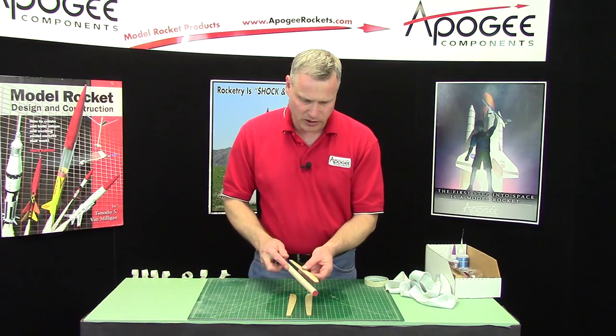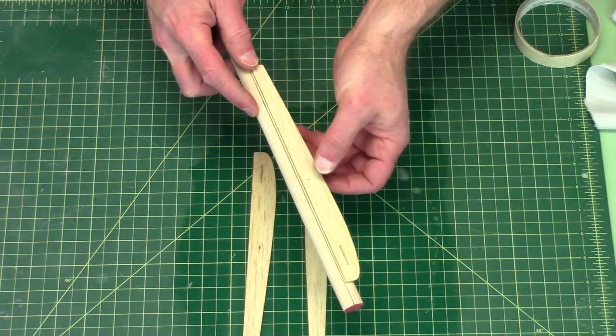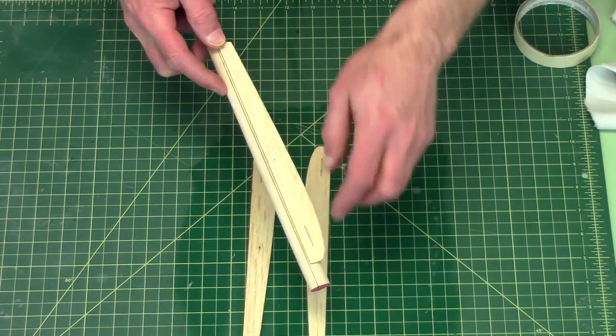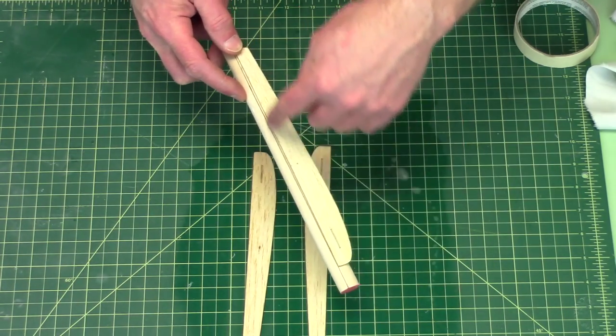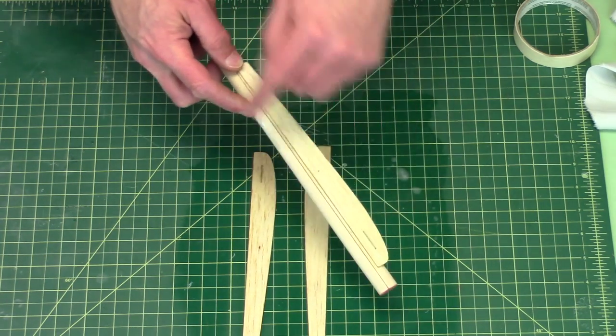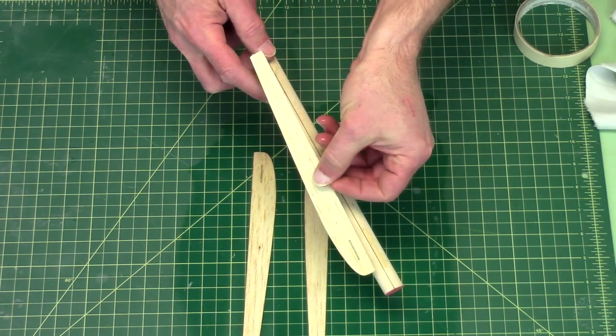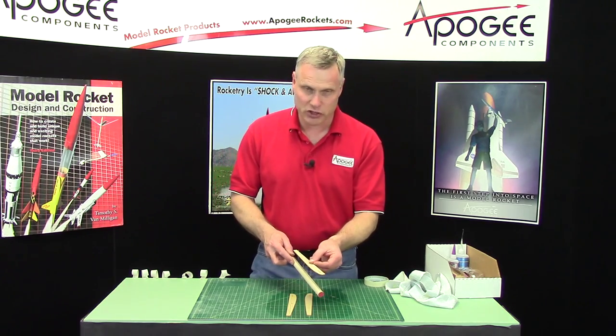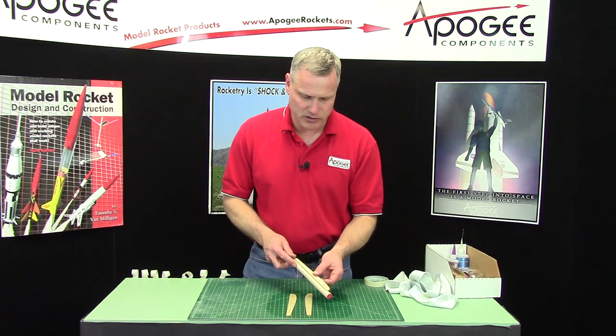Now we're going to lay these on the balsa wood like this but it's important that we get all the pieces going in the same direction. So on this one this is my top and this is on the right side. Just make sure you don't do two like that and one the other way because now it won't start spinning. It's the curvature that actually makes the rocket start spinning.